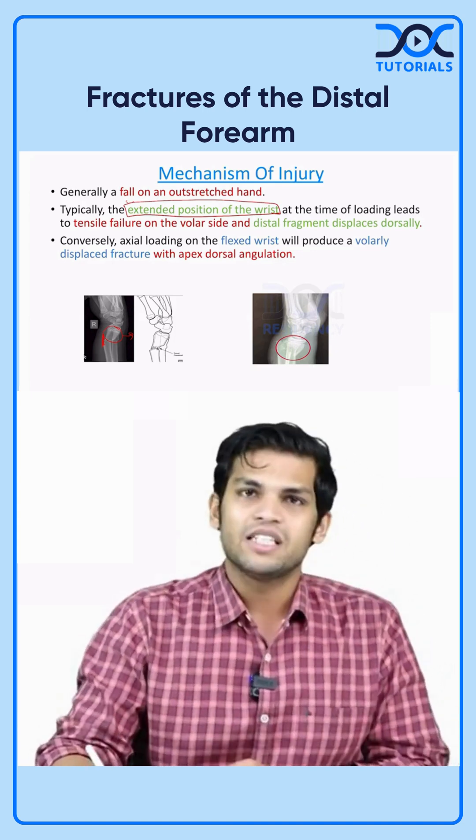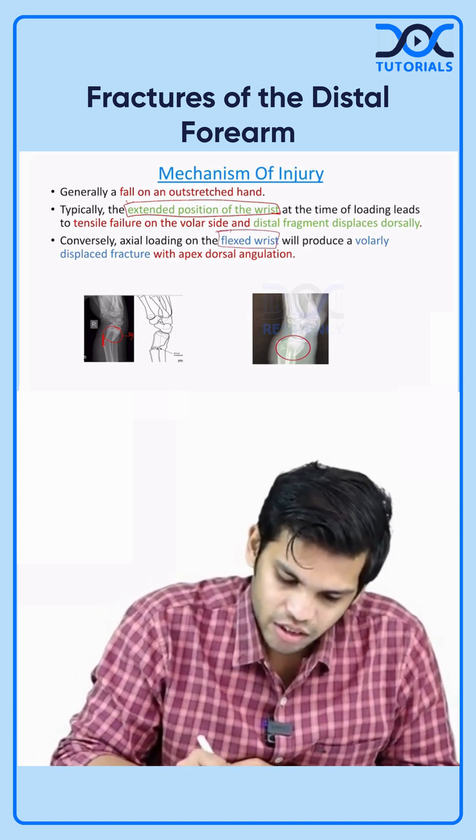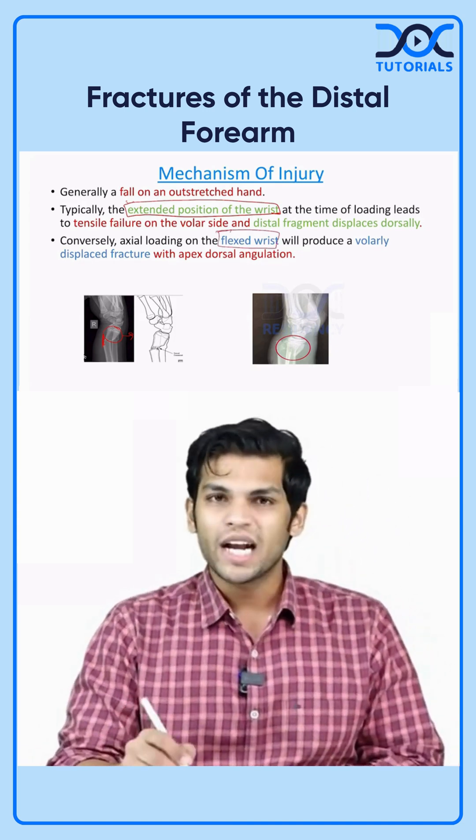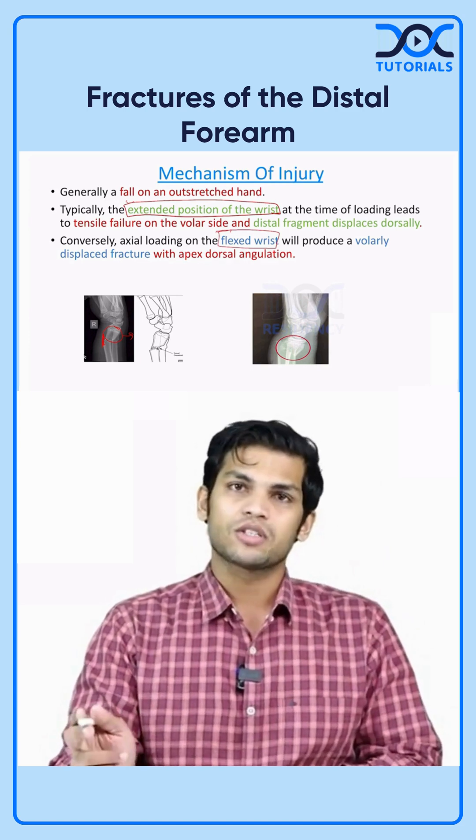Conversely, if axial loading is done on a flexed wrist, this will produce a volarly displaced fragment with the apex dorsally angulated.